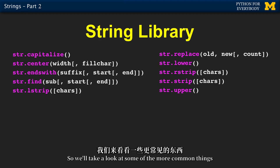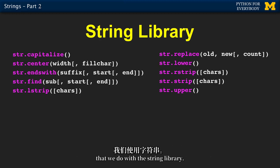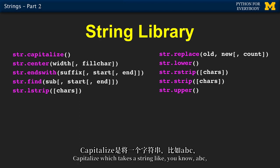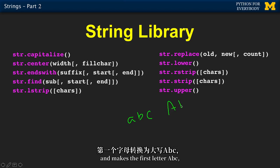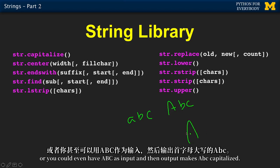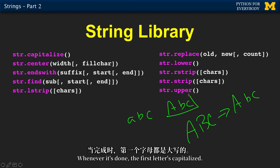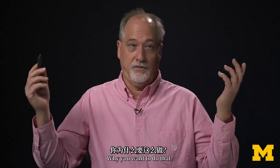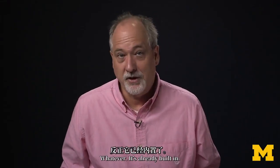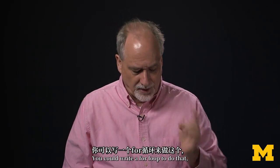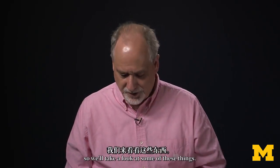One method is capitalize, which takes a string like 'abc' and makes the first letter uppercase, giving 'Abc'. Or if input is 'ABC', output is 'Abc' — the first letter is capitalized. You could write a for loop to do that, but it's already built in to the string library.